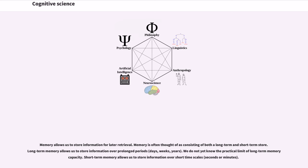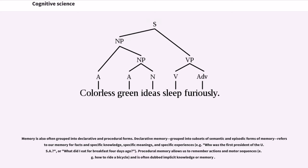Memory allows us to store information for later retrieval. Memory is often thought of as consisting of both a long-term and short-term store. Long-term memory allows us to store information over prolonged periods, days, weeks, years. We do not yet know the practical limit of long-term memory capacity. Short-term memory allows us to store information over short time scales, seconds or minutes. Memory is also often grouped into declarative and procedural forms. Declarative memory, grouped into subsets of semantic and episodic forms of memory, refers to our memory for facts and specific knowledge, specific meanings, and specific experiences, for example who was the first president of the USA, or what did I eat for breakfast four days ago. Procedural memory allows us to remember actions and motor sequences, for example how to ride a bicycle, and is often dubbed implicit knowledge or memory.